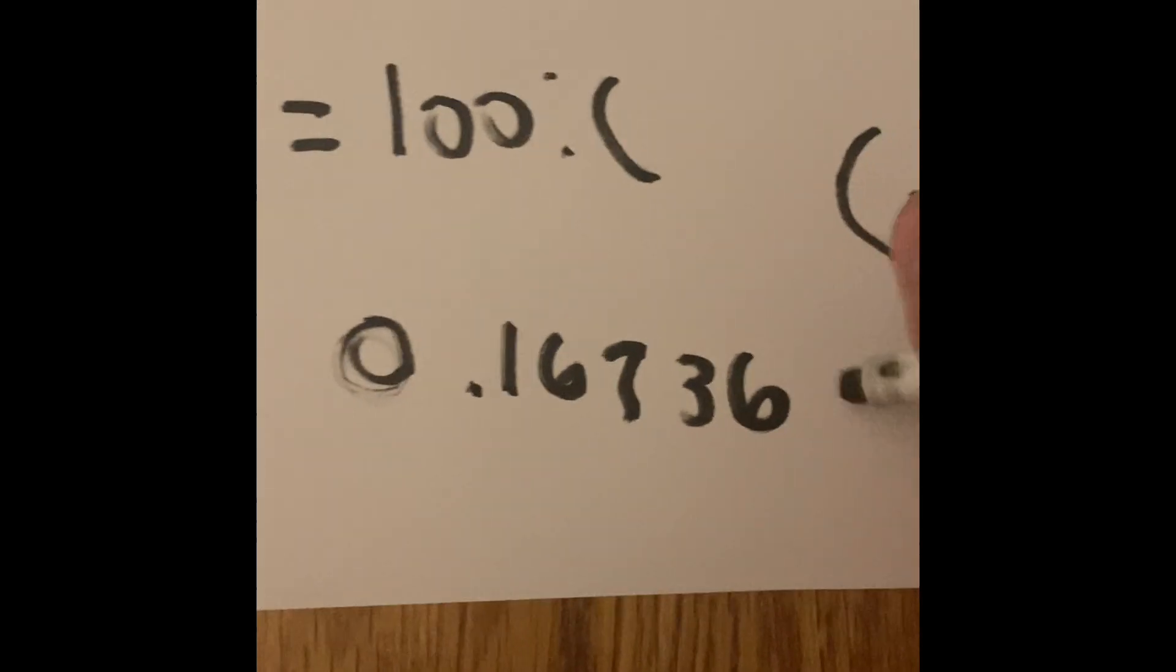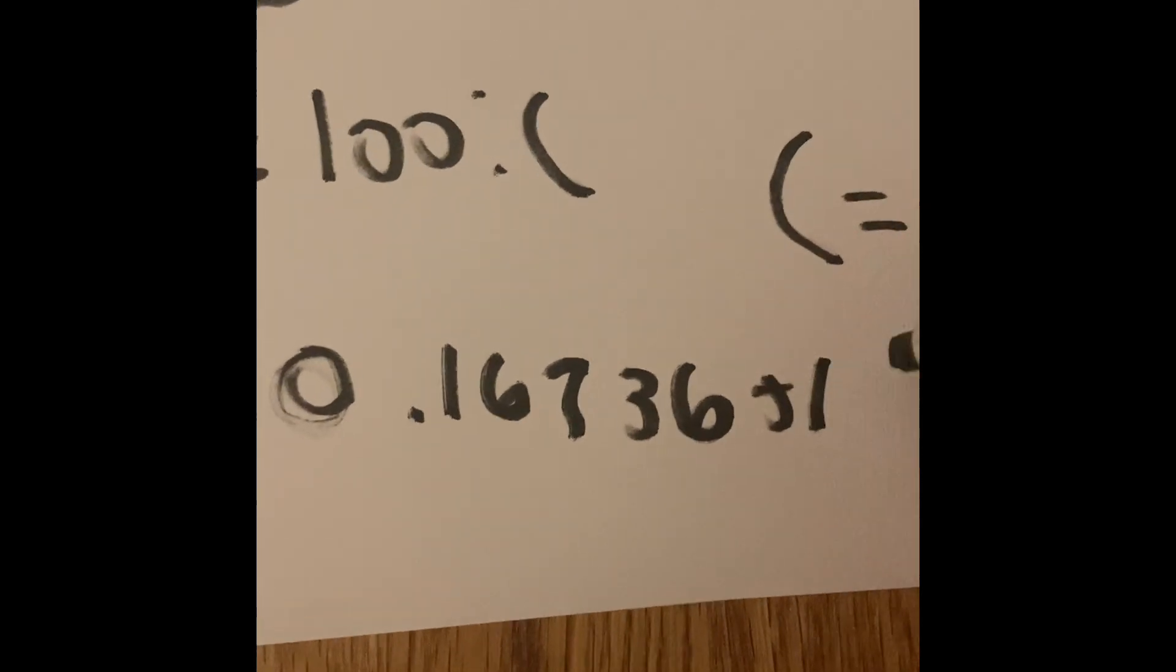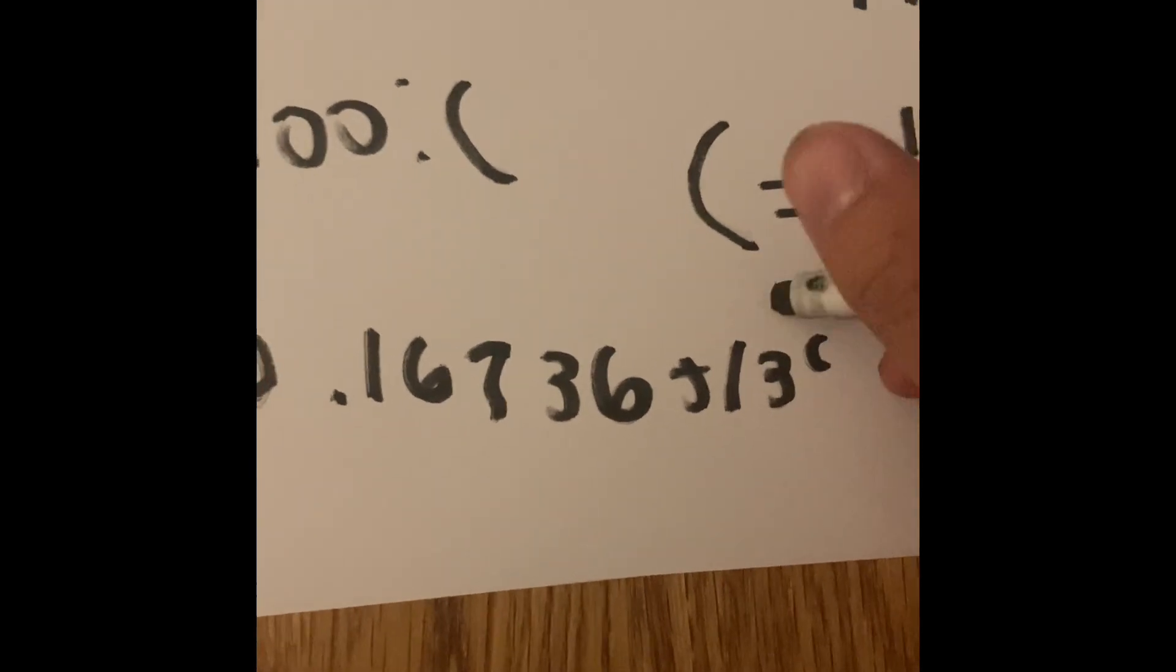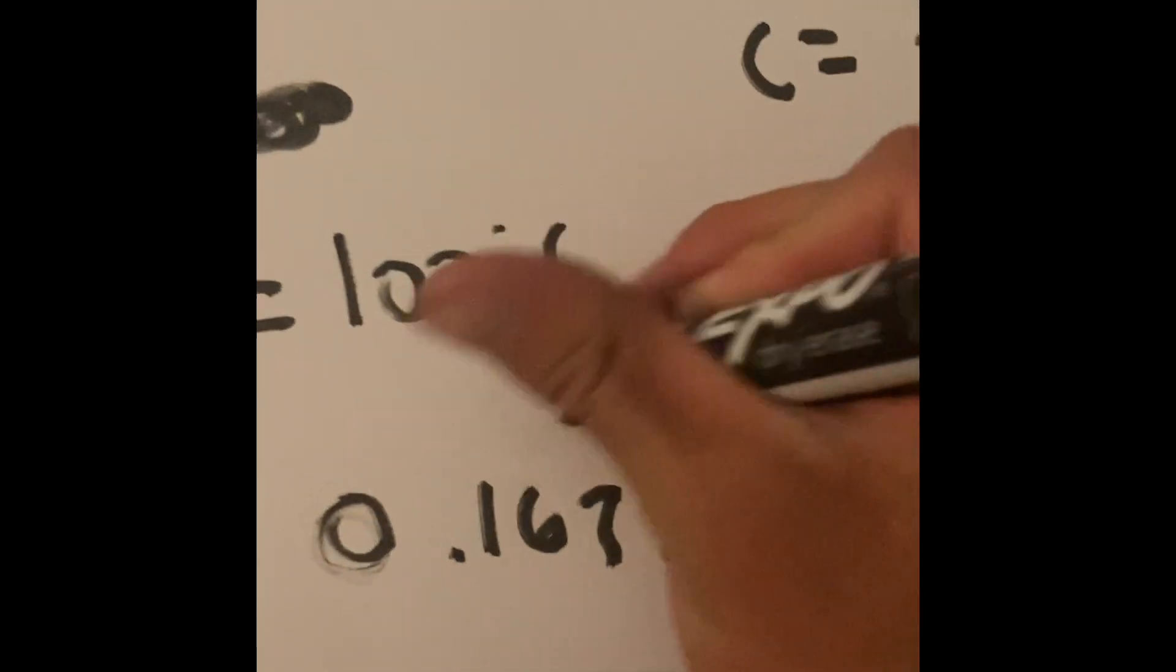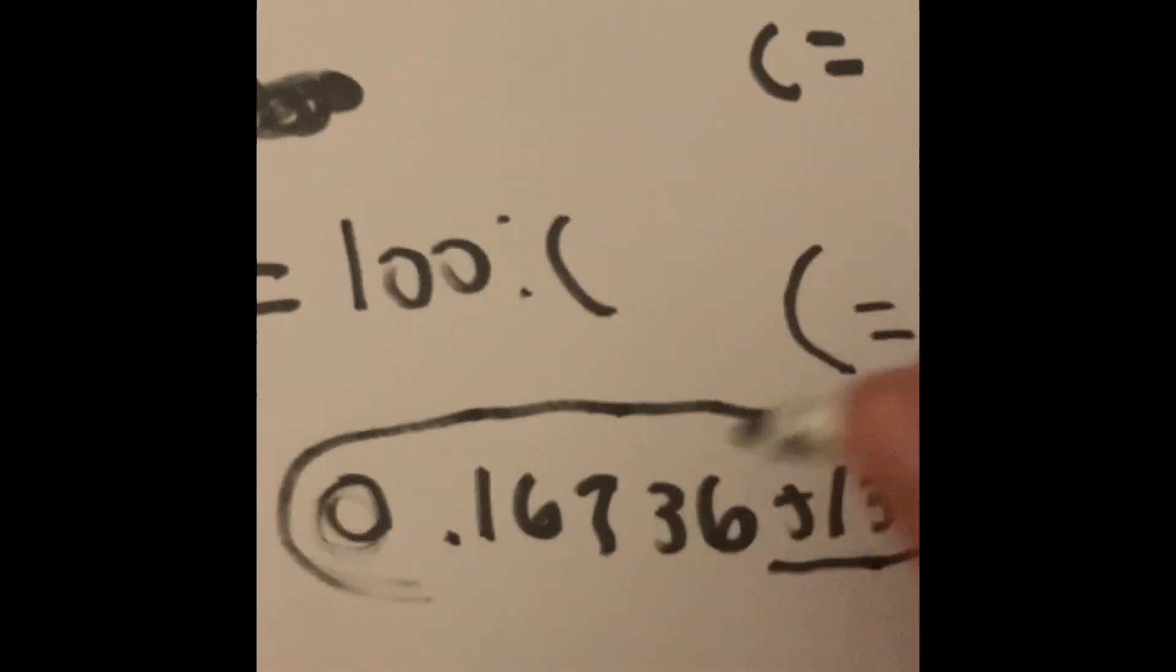And that is in joules per grams Celsius. That is the specific heat of that tiny cube of silver.